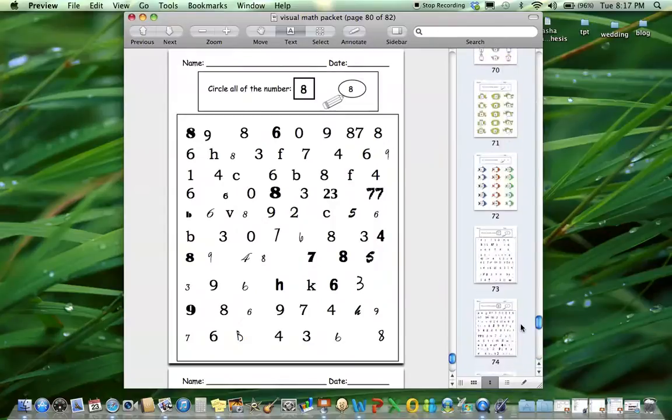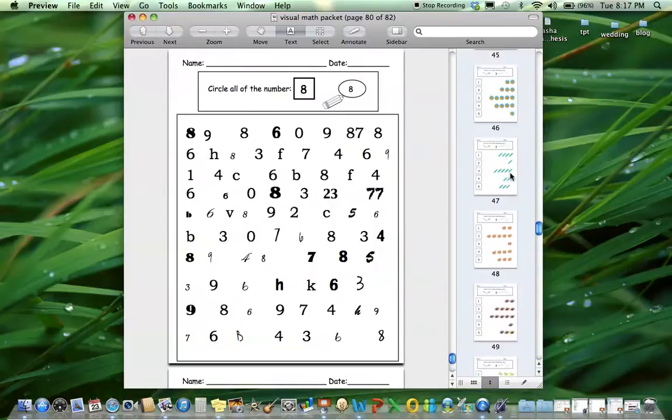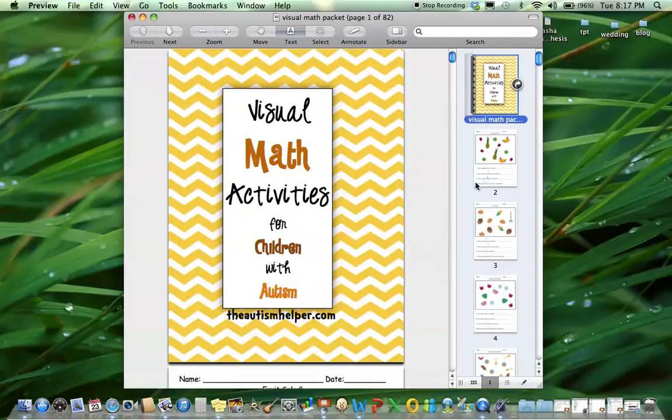So that's it. There's 80 worksheets, jam-packed with all different kinds of stuff. I hope you enjoy it and this was a product preview of visual math activities for children with autism by TheAutismHelper.com.